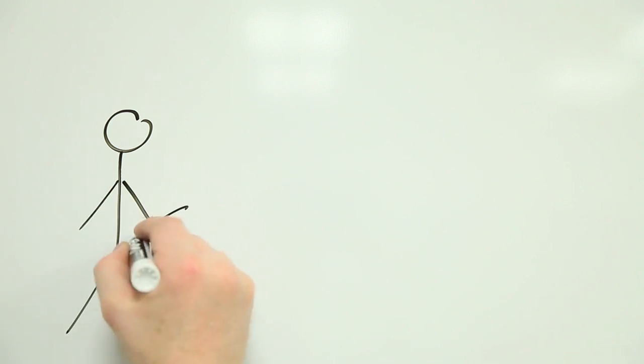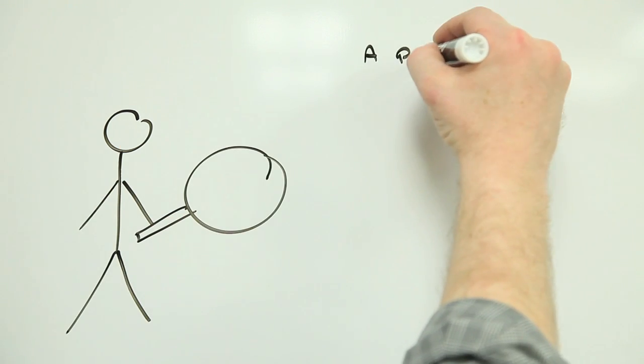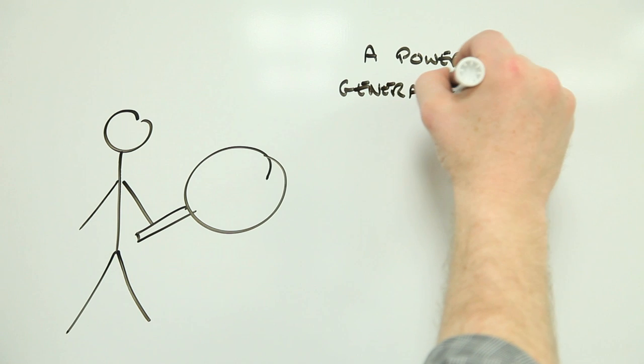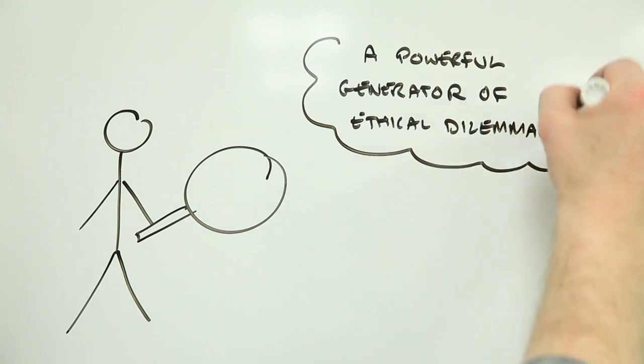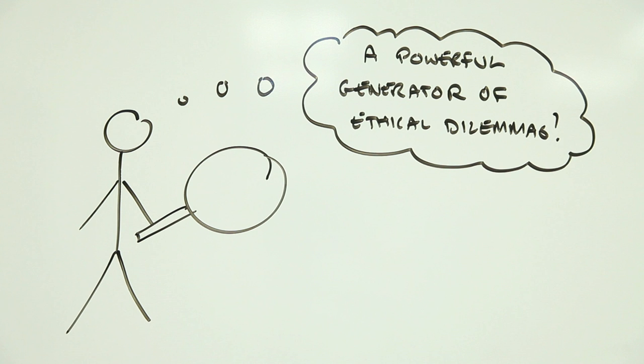These are ethical questions. They arise from what society considers to be acceptable rules of behaviour. And they come about because something can now be measured that could not be measured before.